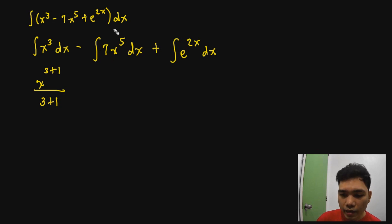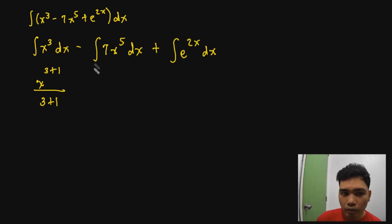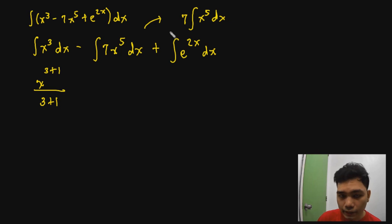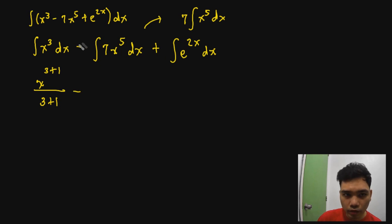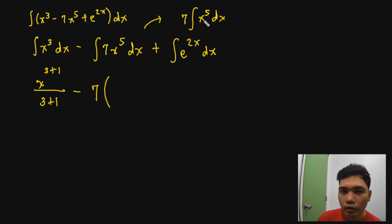I have to make sure each term is a fitting integrand and that I can apply a matching rule. This x cubed is an x to the n rule, where n equals 3. Therefore, the antiderivative is x raised to n plus 1, which is 3 plus 1, divided by n plus 1 — also 3 plus 1. For the second term, this looks like k f of x dx where f of x is x to the fifth, so we rewrite it as 7 times the integral of x to the fifth dx, giving x to the 6th over 6.